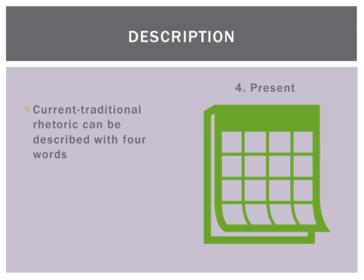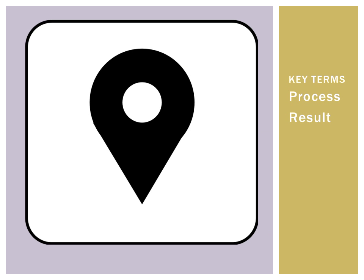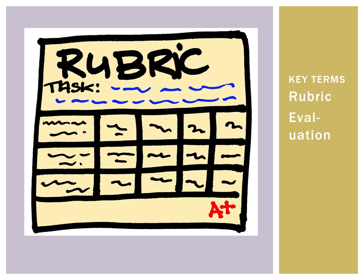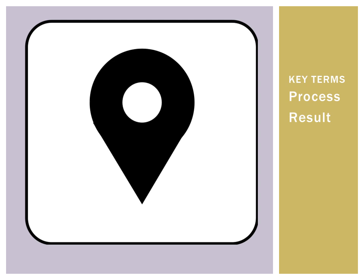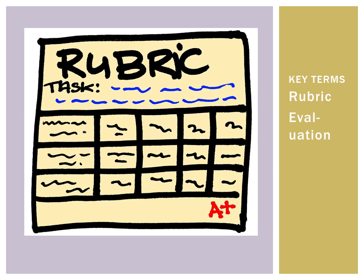Some key terms in CTR: first, process — the instructor says this is the process to take, even though CTR isn't truly process-oriented; they look for process in the result. Second, result — that product the instructor asked the student to make. Third, product — which needs to be graded. Fourth, evaluation — the rubric the student uses to understand how to create the writing and assess how well they did.